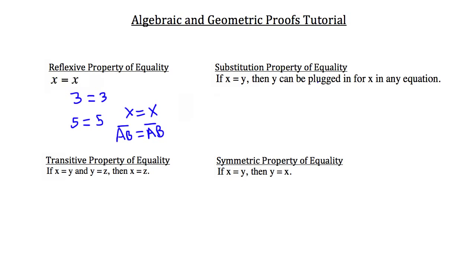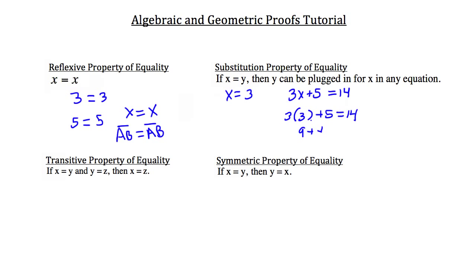The substitution property of equality states that if x equals y, then y can be plugged in for x in any equation. For example, if x equals 3 and we have the equation 3x plus 5 equals 14, we can substitute 3 in for x. 3 times 3 is 9, plus 5 equals 14 — as it should be. We end up with two things equal to each other.